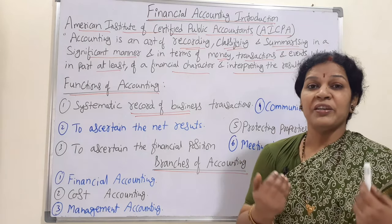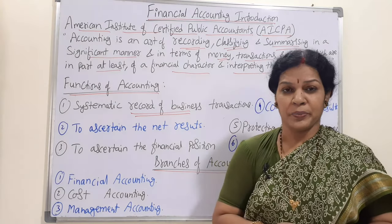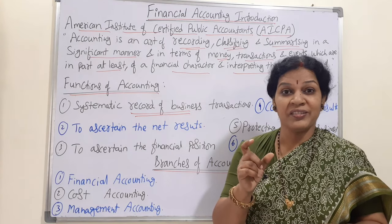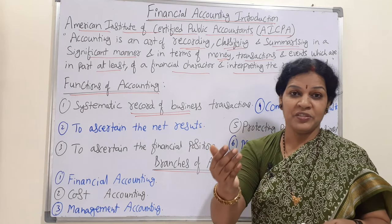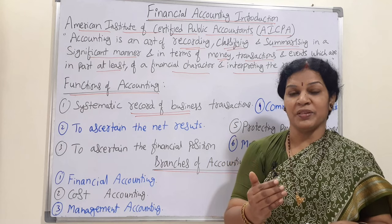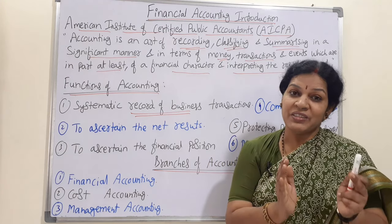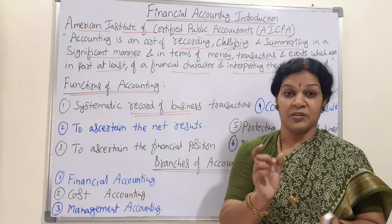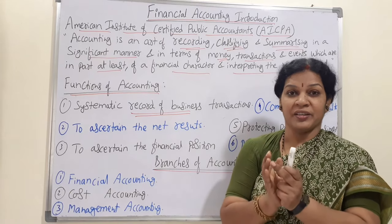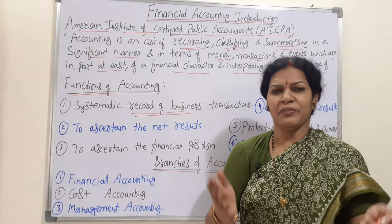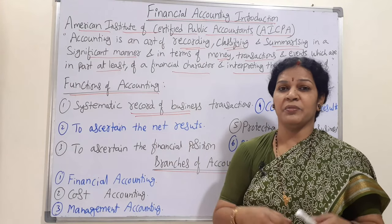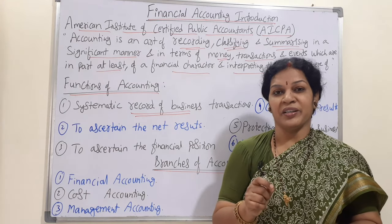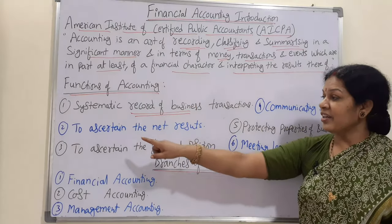When we record all transactions, we have to attach a voucher — that is, evidence of the transaction. For example, if I am purchasing goods worth 1 crore, the vendor will give a receipt — that's called a voucher. That evidence must support the transaction recording; only then is it valid. Simply writing anything without evidence creates a mess for the organization. So systematic means recording transactions with proper supporting evidence.